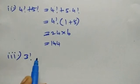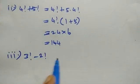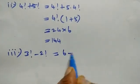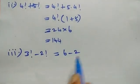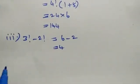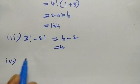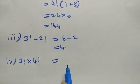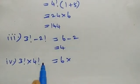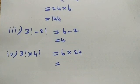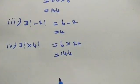Third one: 3 factorial minus 2 factorial equals 6 minus 2, which is 4. Fourth one: 3 factorial times 4 factorial equals 6 times 24, which equals 144.